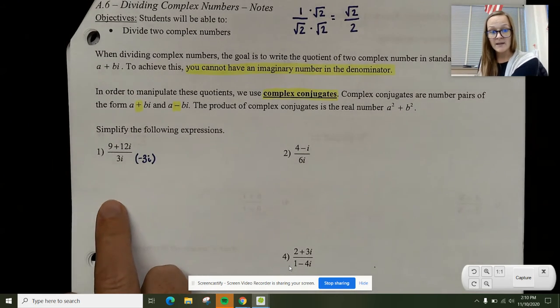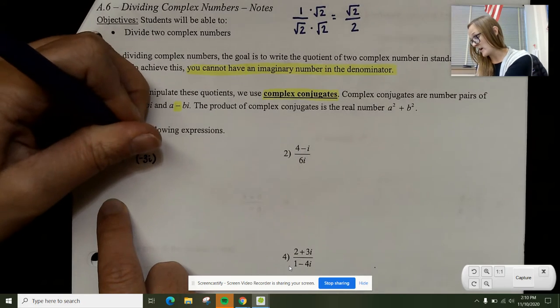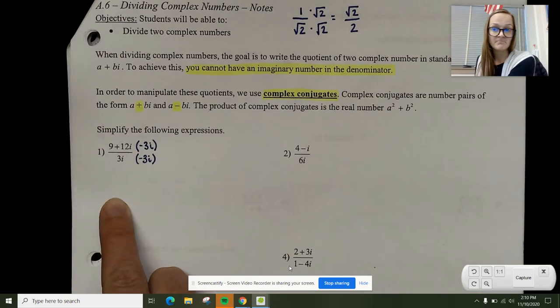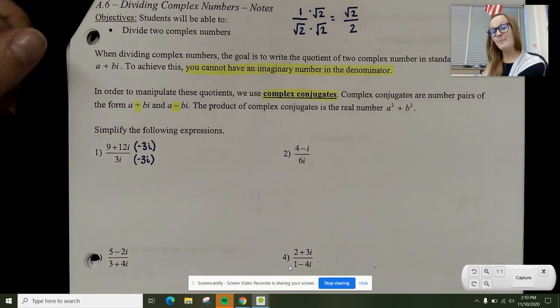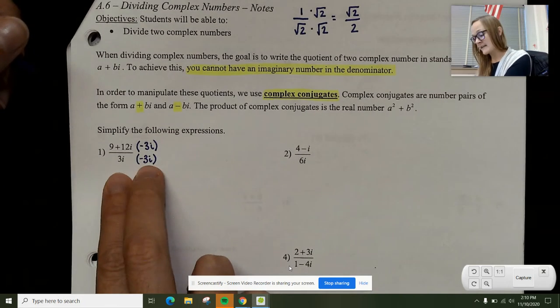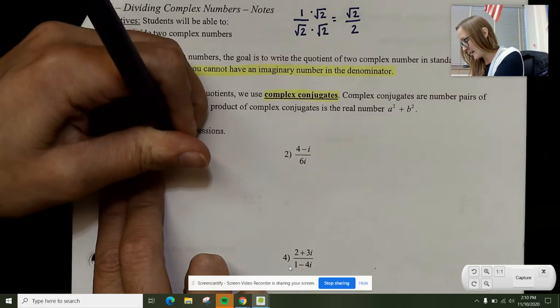When you multiply on the bottom, you also have to multiply on the top. That's called creating an equivalent fraction, an elementary school skill. In the bottom, negative 3i times 3i gives me negative 9i squared.